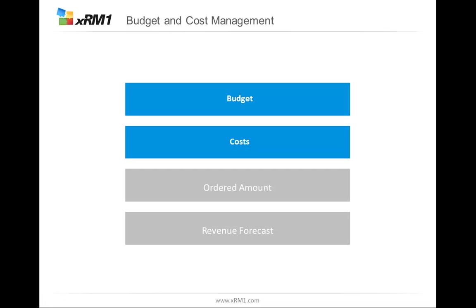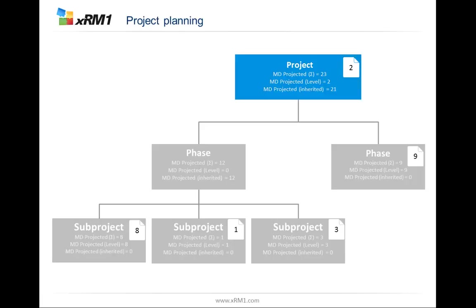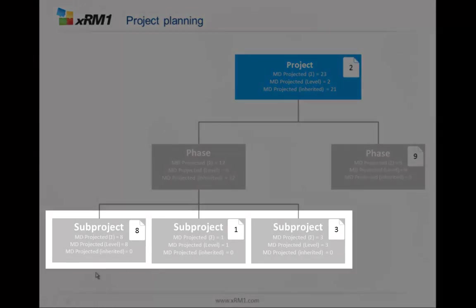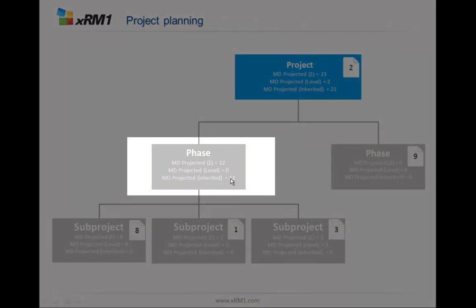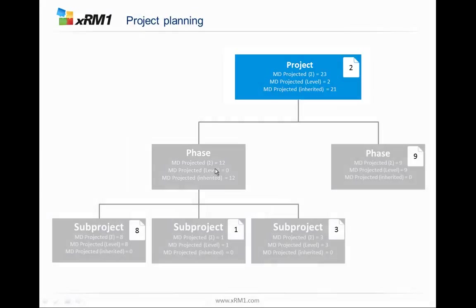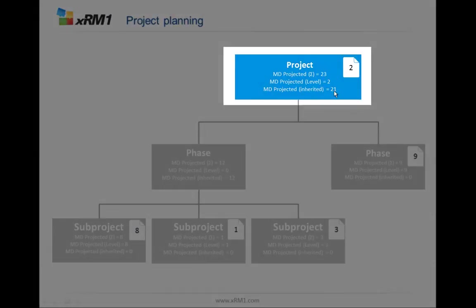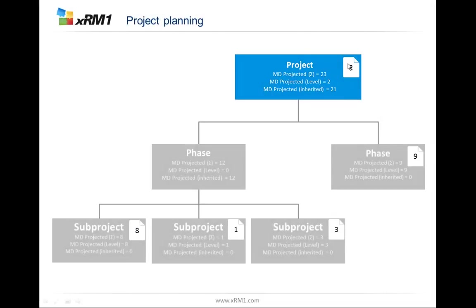Keep in mind the project inheritance. Remember you plan every work, budget, and costs on the task level. So if this is 8, 1, and 3 days, this phase has inherited 12 man days. If nothing is on the phase level, it's 12 man days. So this project has 21 man days inherited from this node, 2 on the level — 23 man days in sum.